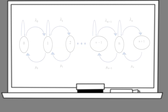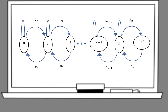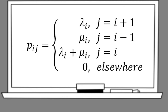For this queuing system, we can construct a Markov chain diagram as follows. From this Markov chain diagram, we can construct a transition probability matrix. We can determine the probabilities first, such as from state 0 to state 1, the arrival rate is denoted as lambda_0. From state 1 to state 0, the leaving rate or serving rate is mu_0, and so on and so forth. In general, P_ij are as follows.